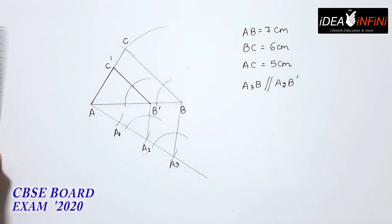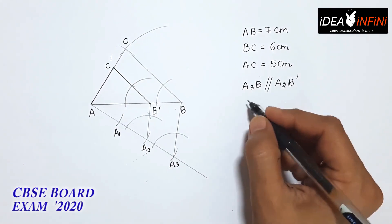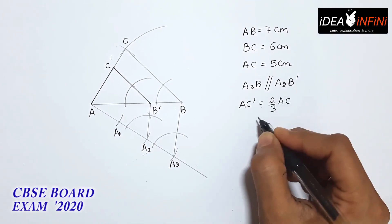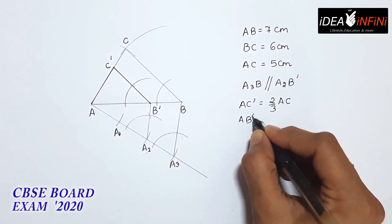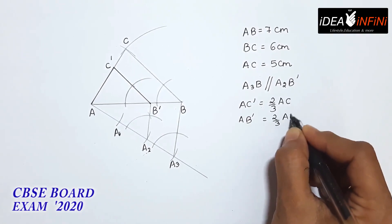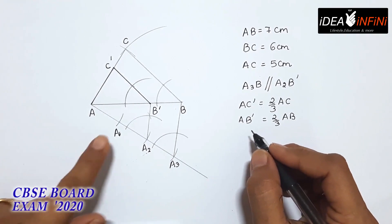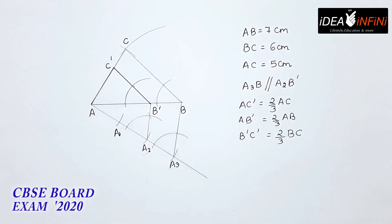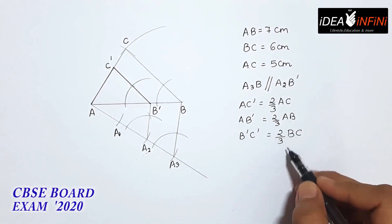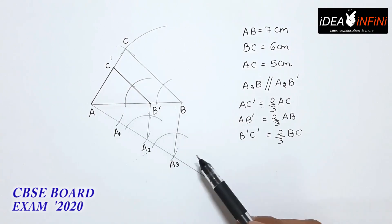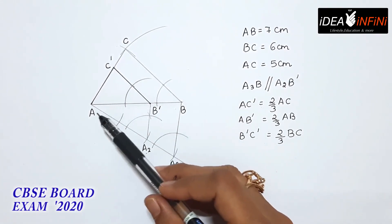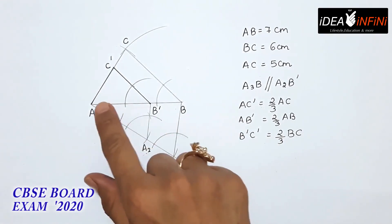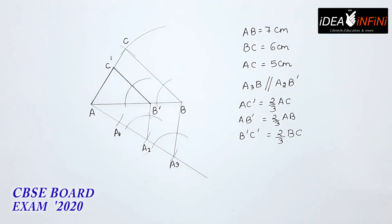आपका required triangle है A, C dash, B dash। AC dash = 2/3 of AC, AB dash = 2/3 of AB, और B dash C dash = 2/3 of BC। यानी triangle A, C dash, B dash is similar to triangle A, C, B और वो triangle 2/3 of the given triangle है — अंदर वाला triangle आपका 2/3 of the given triangle है।